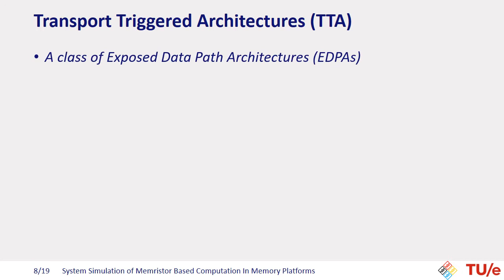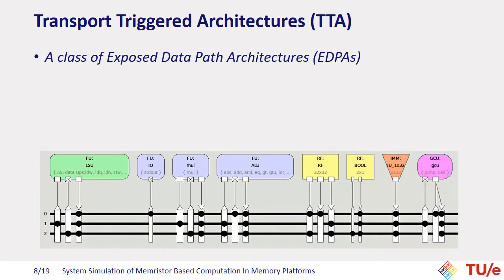We integrated our unit into a transport-triggered architecture, which is a class of exposed data path architectures. In these architectures, the compiler can program the data movement between units. For example, there is no need for data to go to the register file — it can be directly transferred from a load store unit to an ALU unit. Here you see a version of the TTA called LOTTA, which is specifically designed to minimize power consumption. We used this design as a baseline for our comparisons.